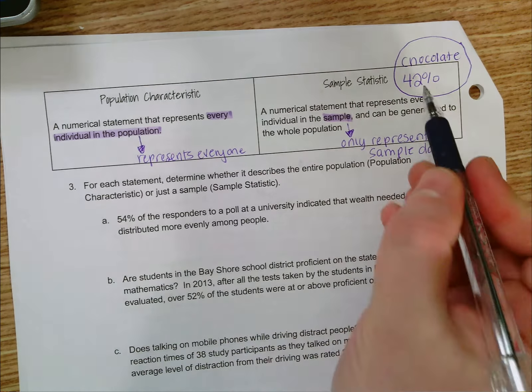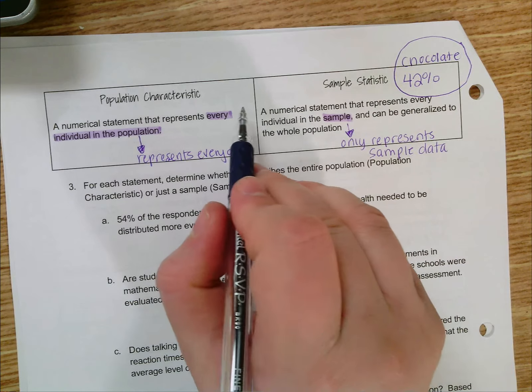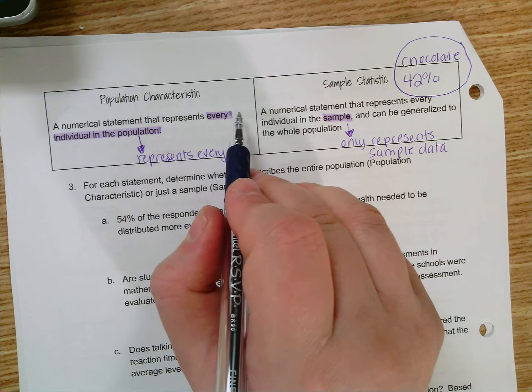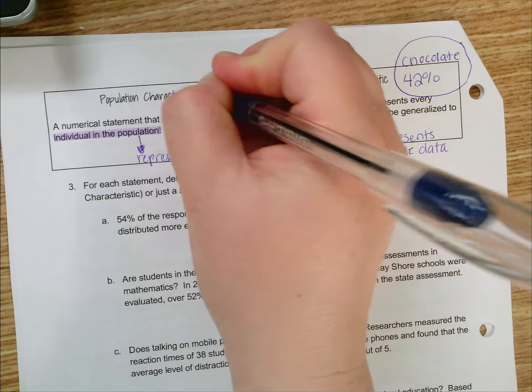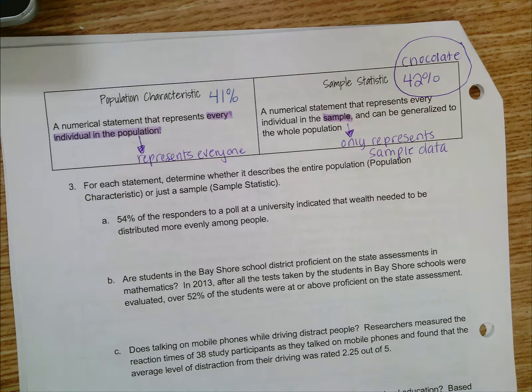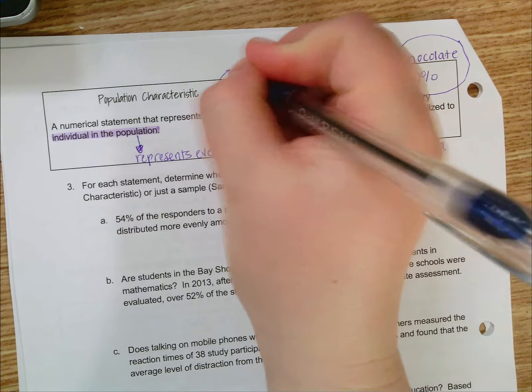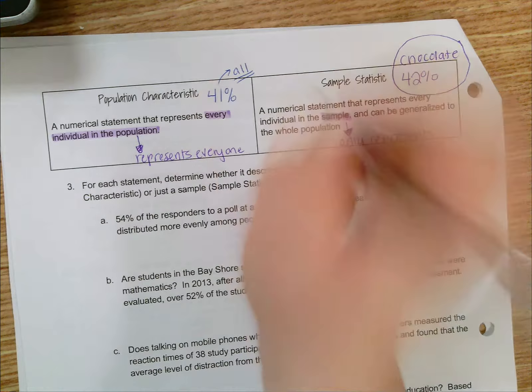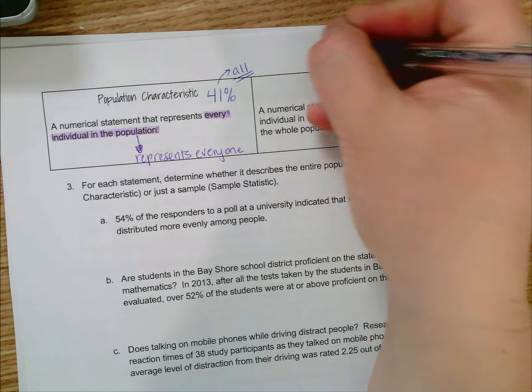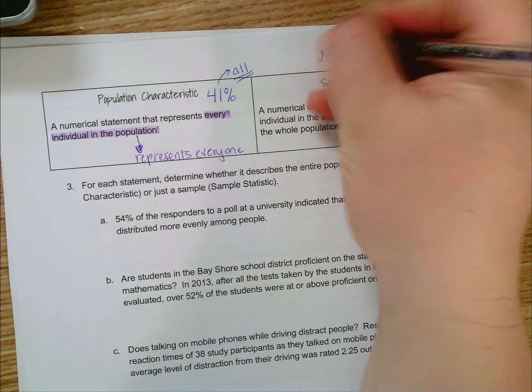only 41%. Maybe the population characteristic is a little off. So this number would describe all of the people we're thinking about; this number would describe just the people we asked.